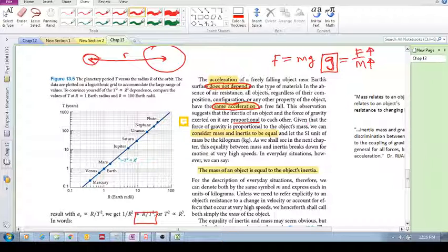Okay, now, they speak about, we need to consider now mass and inertia to be equal. And they say, as we shall see in the next chapter, this equality between mass and inertia breaks down for motion at very high speeds. The mass of an object is equal to the object's inertia.